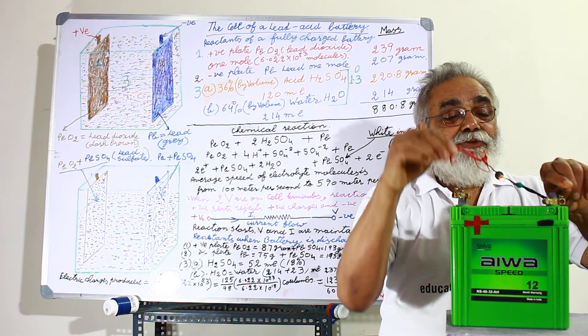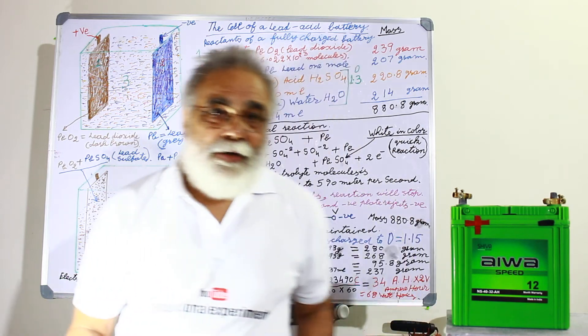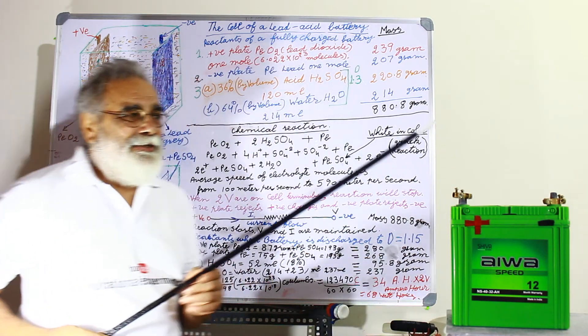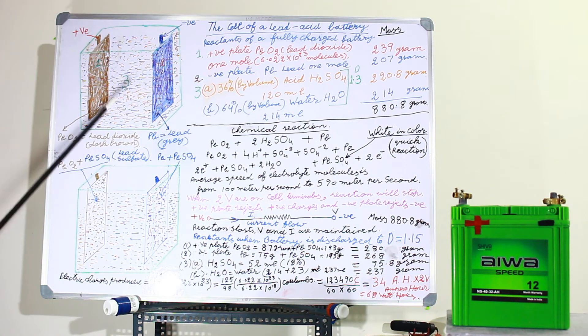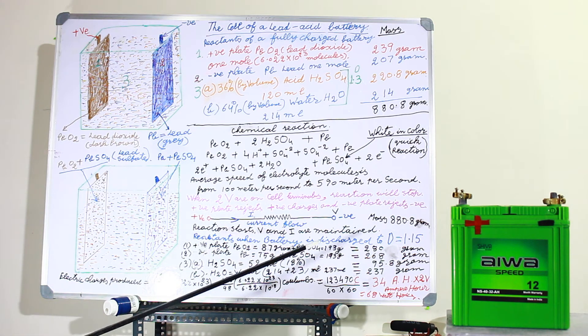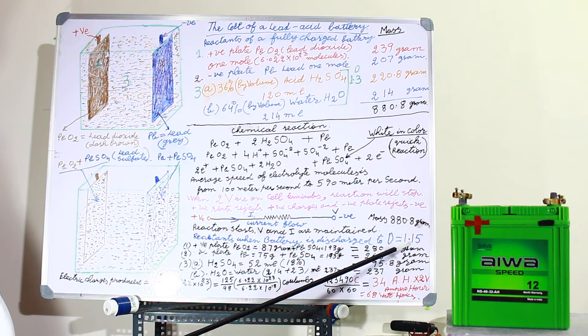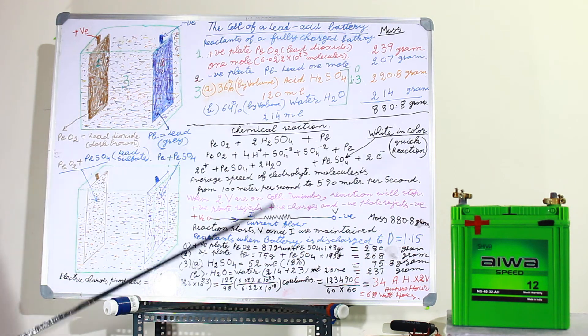If we continuously use this battery, this battery will go on discharging. The potential difference on these points will go down and the reaction will start again. And as the reaction starts, the battery will be discharged. But we are not going to discharge the battery completely because if we completely discharge the battery we will not be able to revive it.